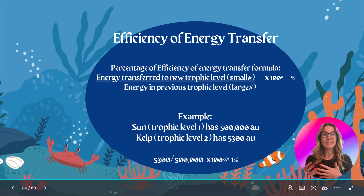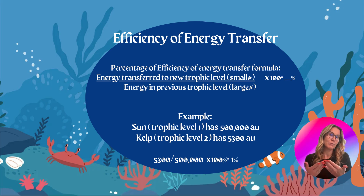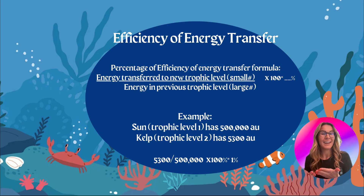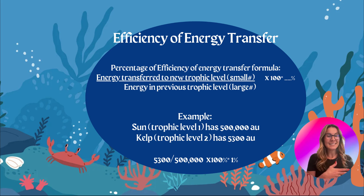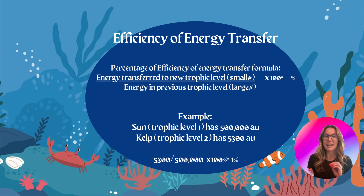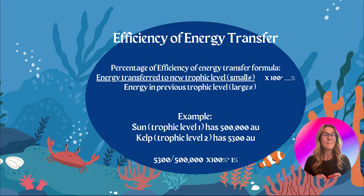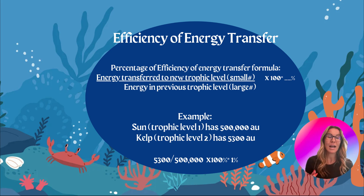When it comes to energy transfer — kelp is a photosynthesizer. When kelp does photosynthesis, it releases energy. When something consumes the kelp, like a sea urchin, it uses the energy from the kelp for its own energy. Then when the sea urchin is consumed by a sea otter, that sea otter gains energy from the sea urchin. It's not a perfect ten percent, so we won't always see exactly ten percent energy transfer.